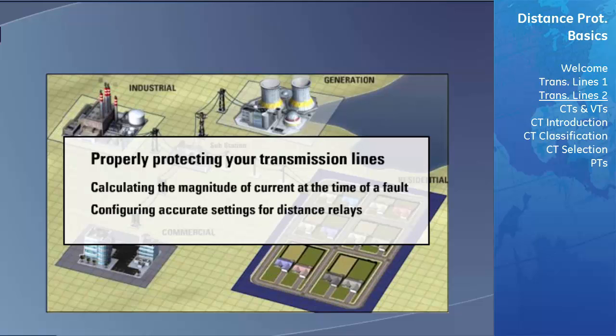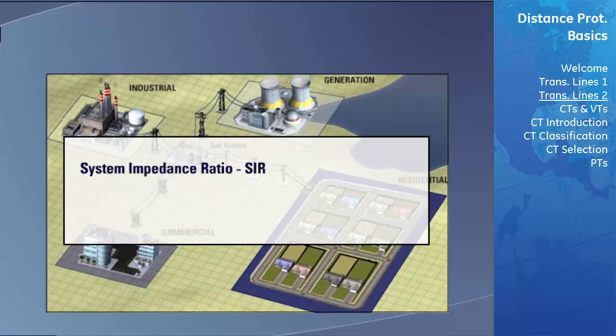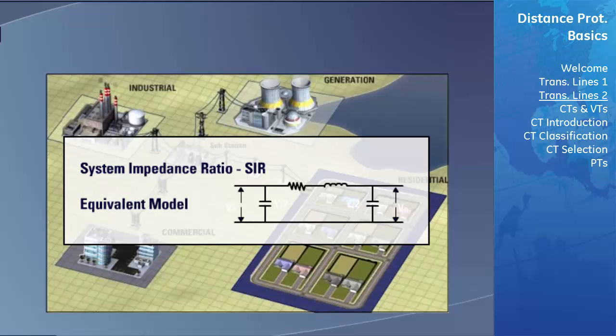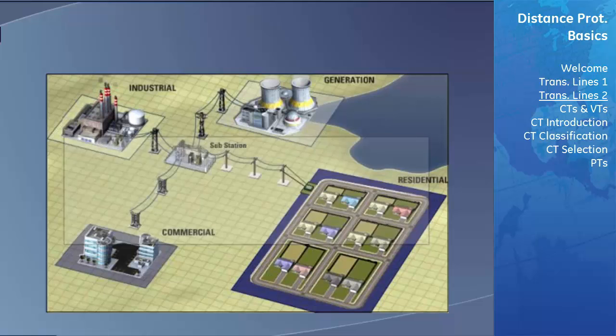In order to appropriately do this, we must first calculate the system impedance ratio and develop an equivalent electrical model of the transmission line. The system impedance ratio is a factor that needs to be considered when determining how to protect a transmission line and can greatly affect what will happen to a power system at the time of a fault.